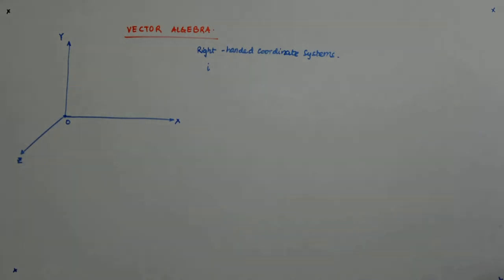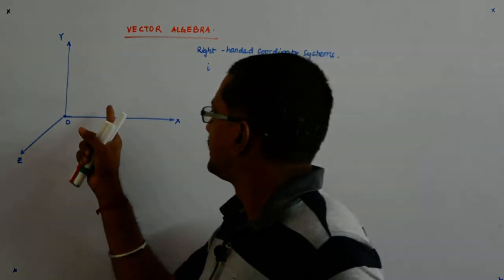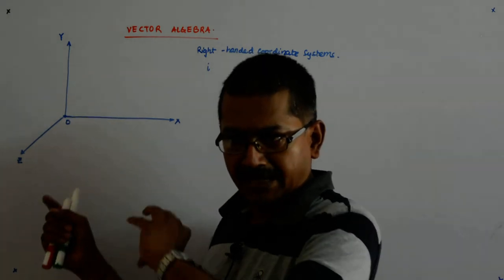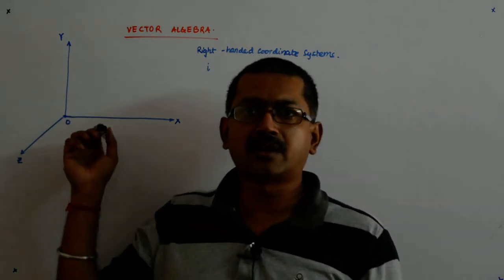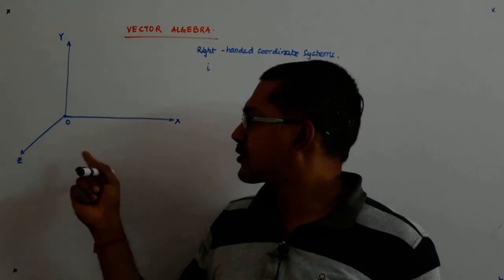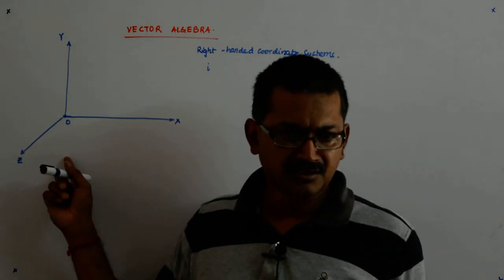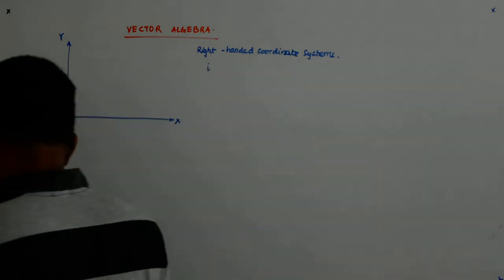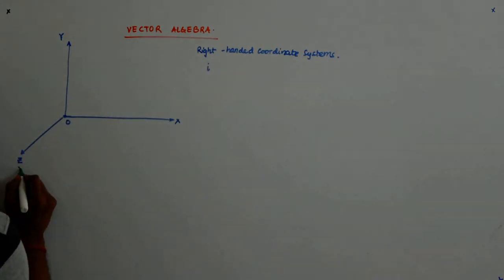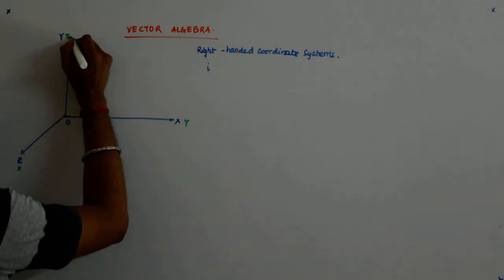So, if x goes on to y, then it is anti-clockwise, and a right-handed screw will linearly move outward — in the direction of z. So that should move in the direction of z. You understand that? So you will be perfectly okay even if you write this as x, this as y and this as z.